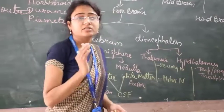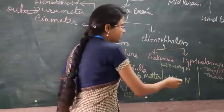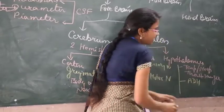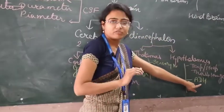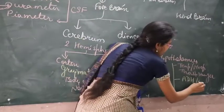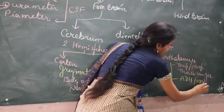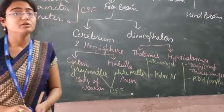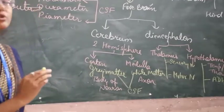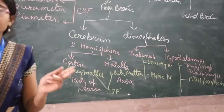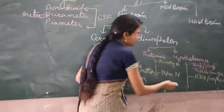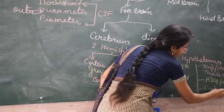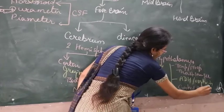Secondly, the hypothalamus secretes many hormones, especially two hormones: ADH (anti-diuretic hormone) for controlling and balancing our body, and secondly oxytocin. The third important function of the hypothalamus is that it is the control center of the pituitary gland, which is why the hypothalamus is known as the master gland controller.